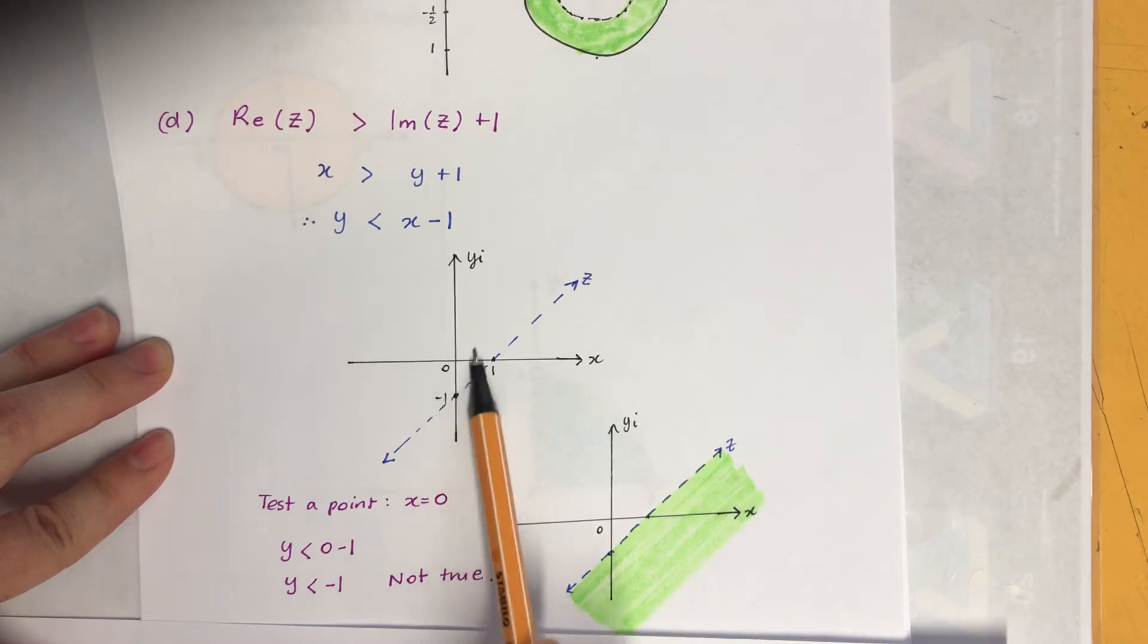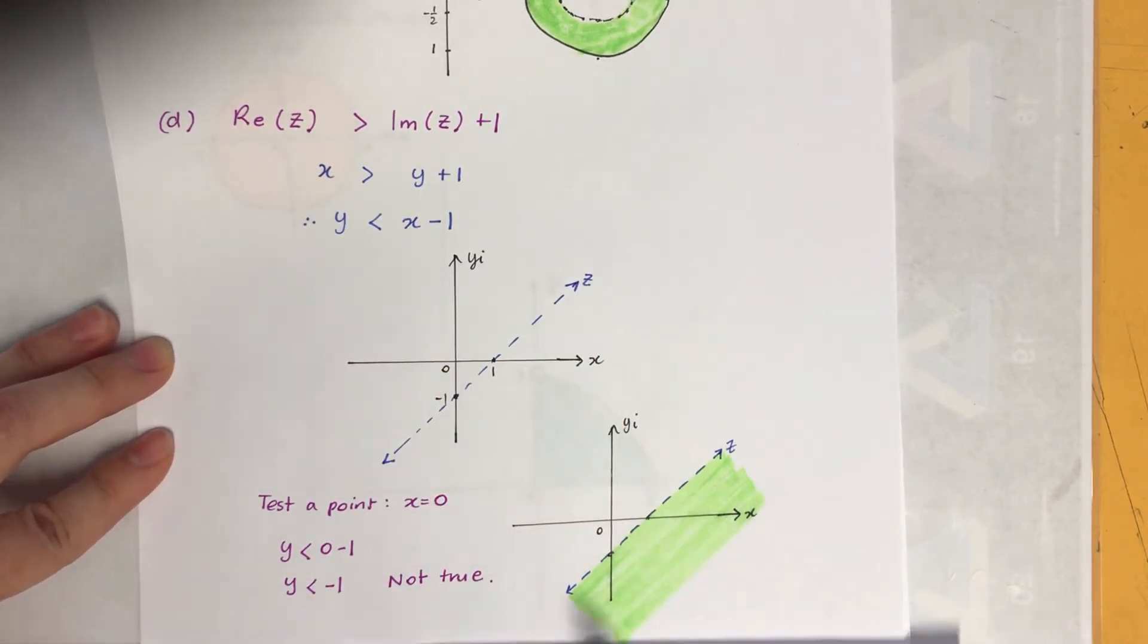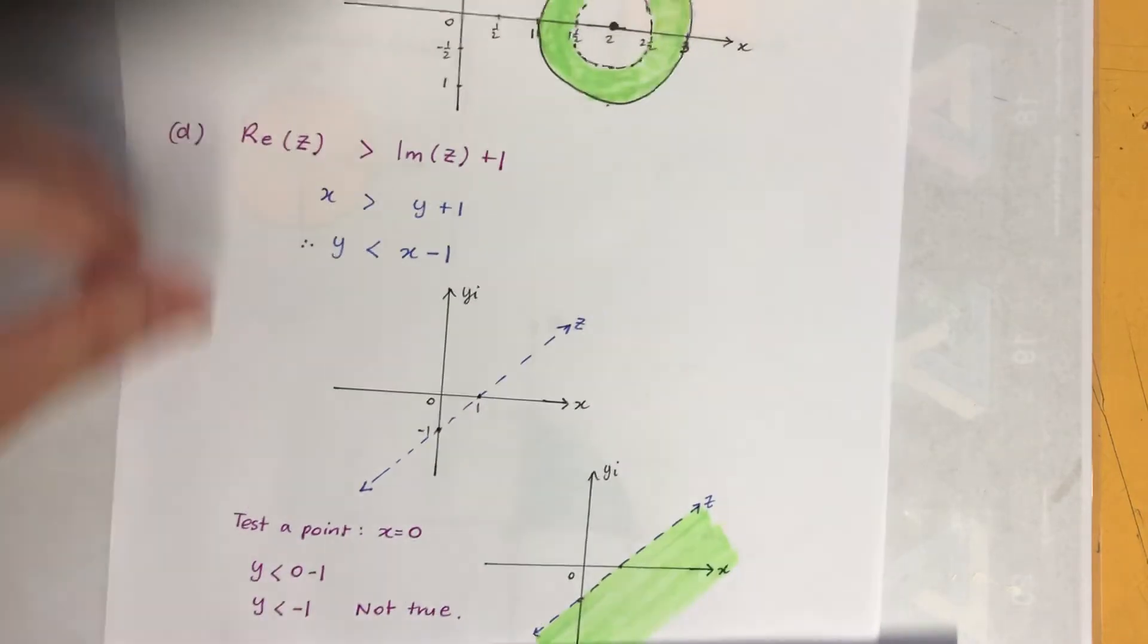Which part is shaded, you just have to test the point. I'm just going to test zero. If it's satisfying, it'll be shading this part, if it's not, this part, which I've just done. So it wasn't too bad.